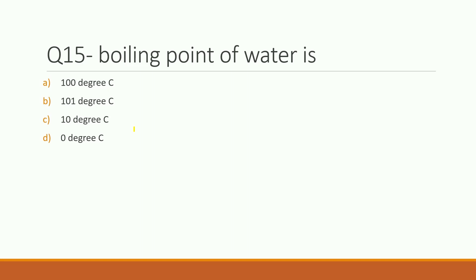Last question: what is the boiling point of water? Options are 100°C, 101°C, 10°C, or 0°C. The right answer is 100 degrees Celsius. Water boils when the temperature reaches 100°C. At temperatures like 70°C or 90°C, water is hot but does not yet boil.